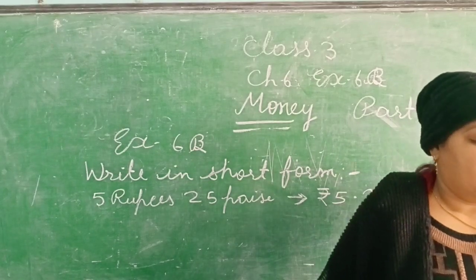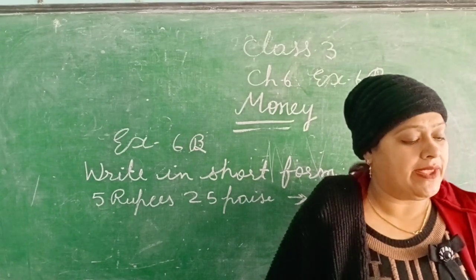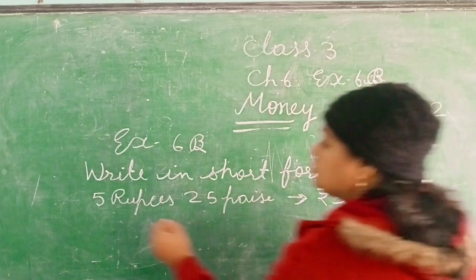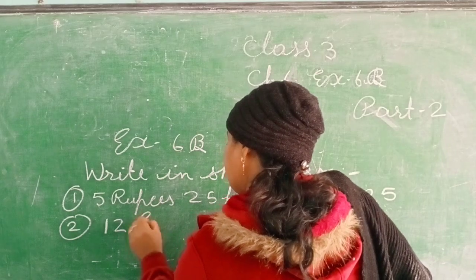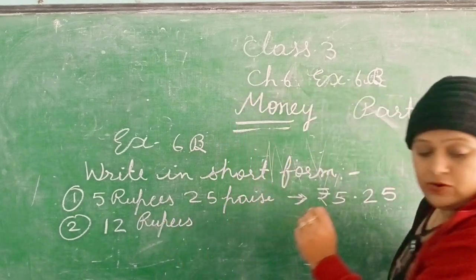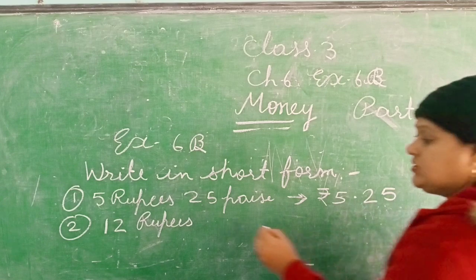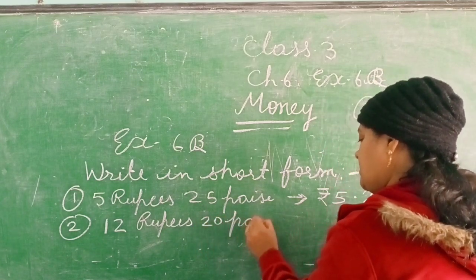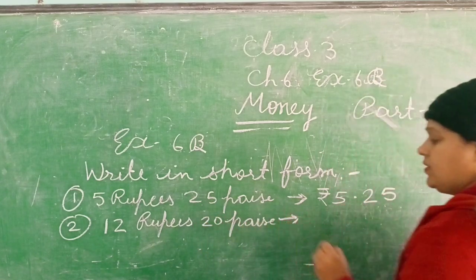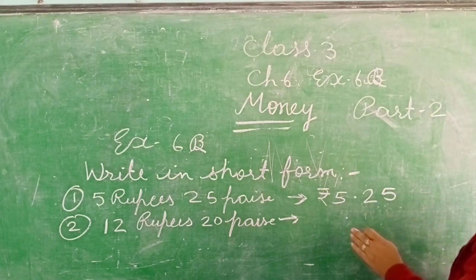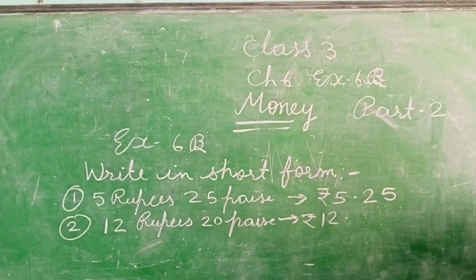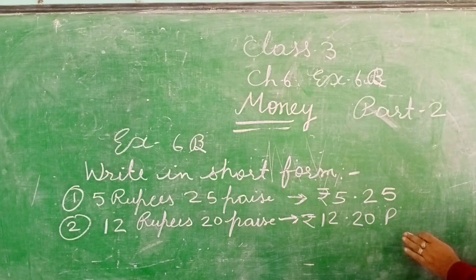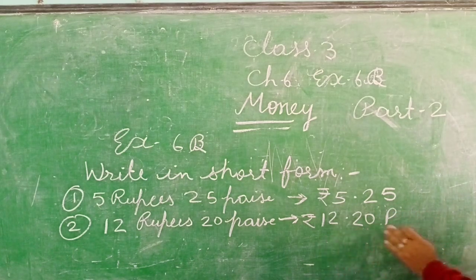Next question: 12 rupees 20 paise. Question number 1 final — 12 rupees 20 paise in short form is written as Rupees 12.20.